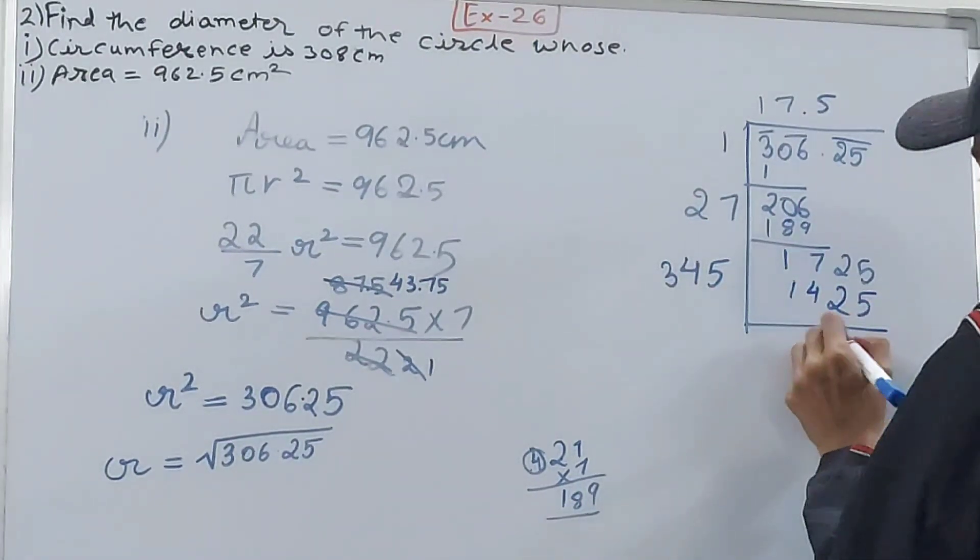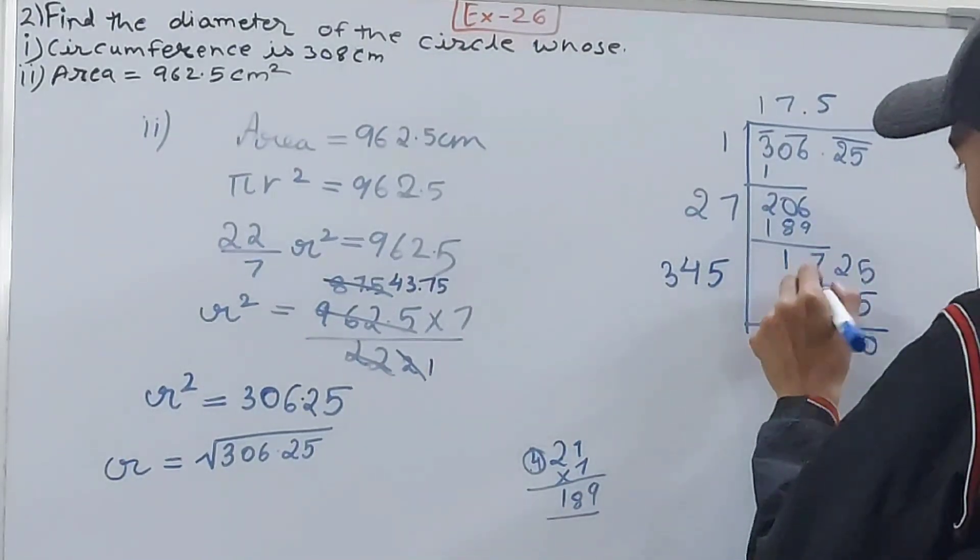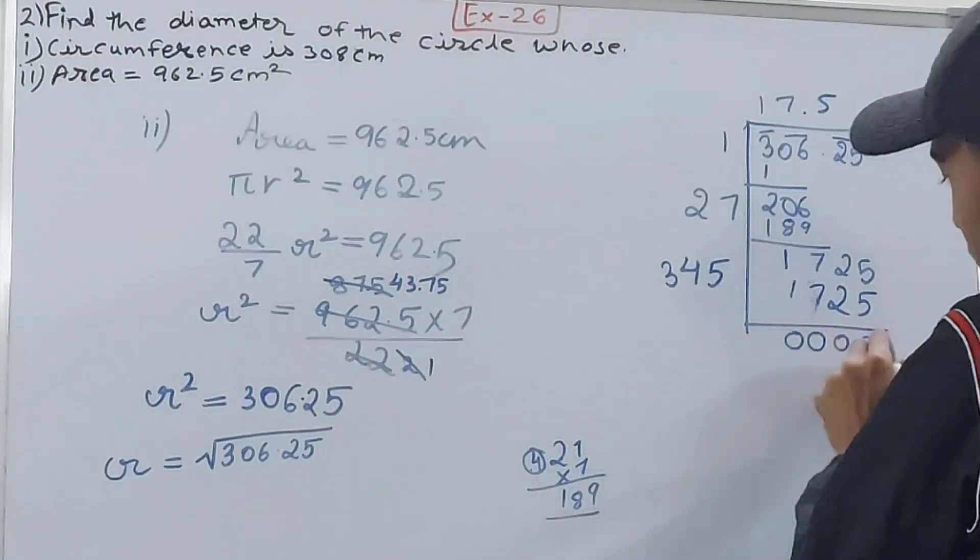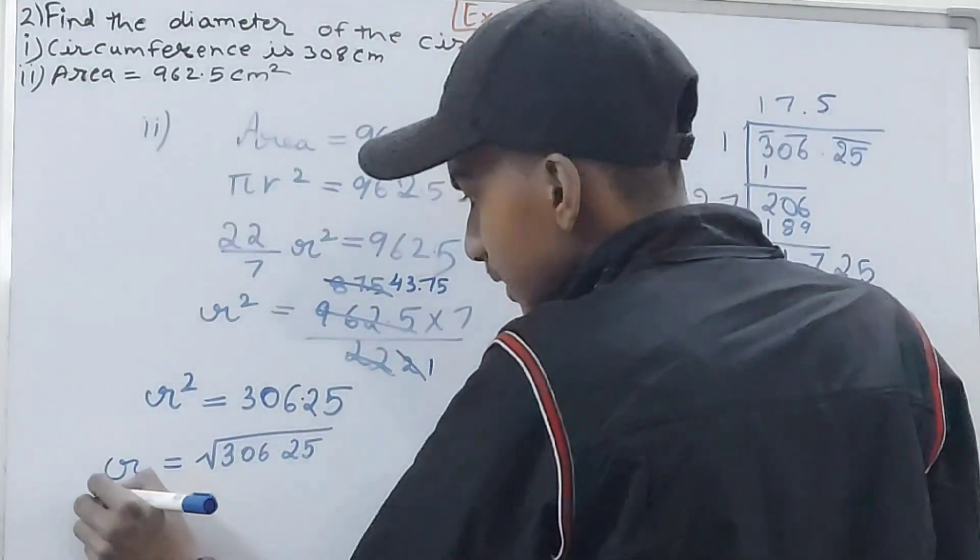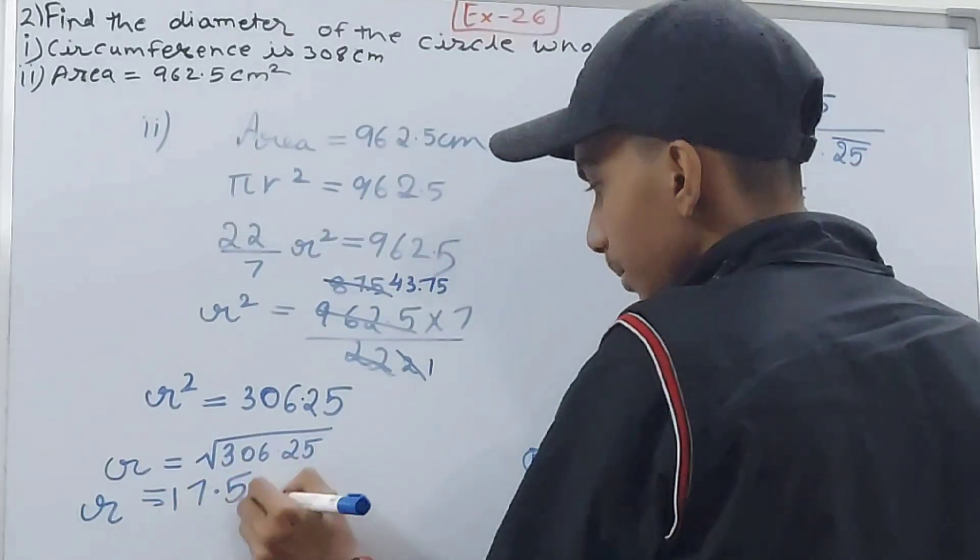So you get the radius is equal to 17.5 centimeters. Now I want the diameter because diameter has been asked. So diameter is twice the radius.